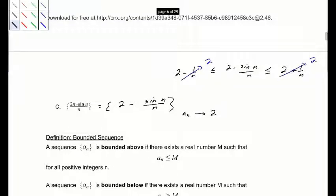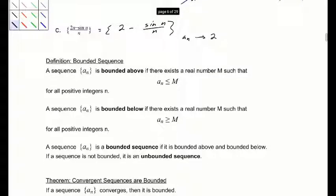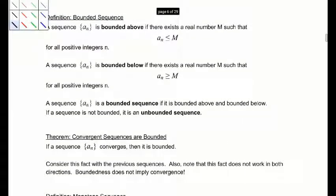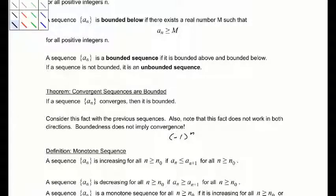A sequence is bounded above if there is a number M such that every term is less than or equal to M. Bounded below is the same idea with a lower number. A sequence is a bounded sequence if it is both bounded above and below; otherwise it is unbounded. An important fact: if a sequence converges, then it is bounded. However, just because something is bounded does not mean it converges — for example, the alternating sequence bouncing between negative 1 and 1 is bounded but divergent.